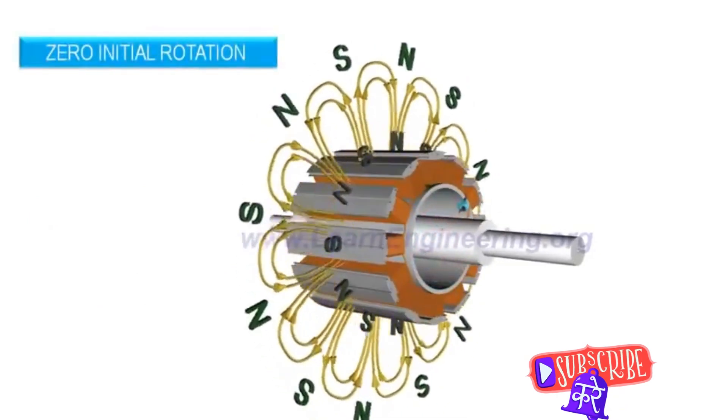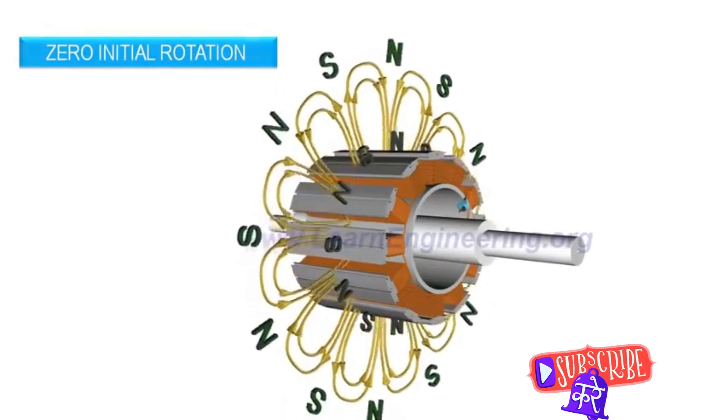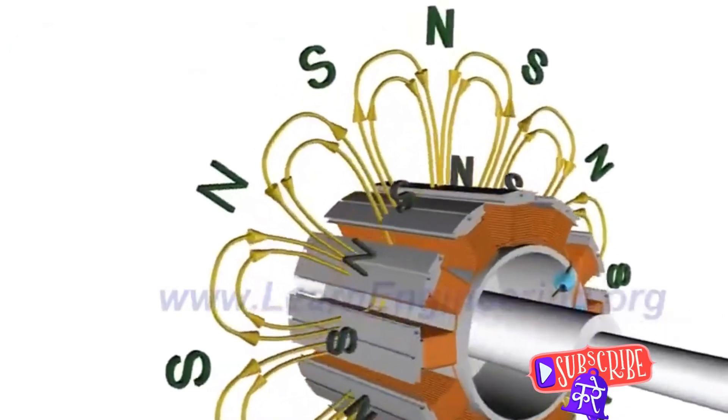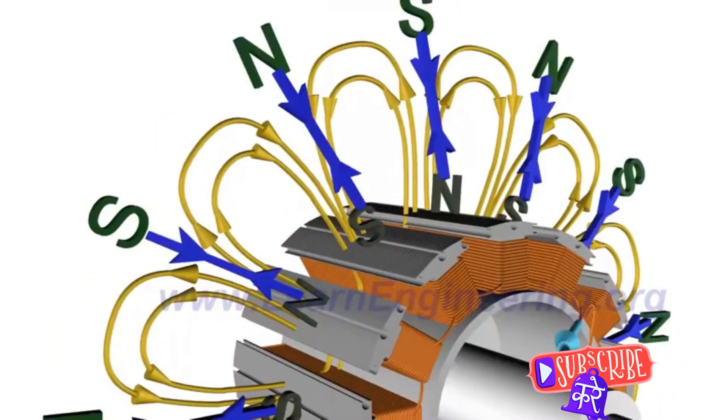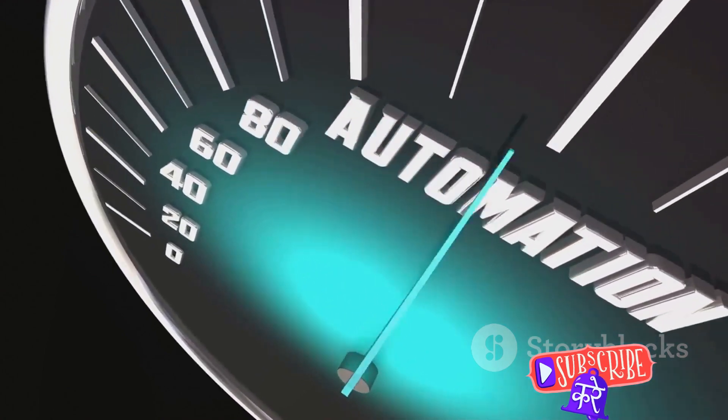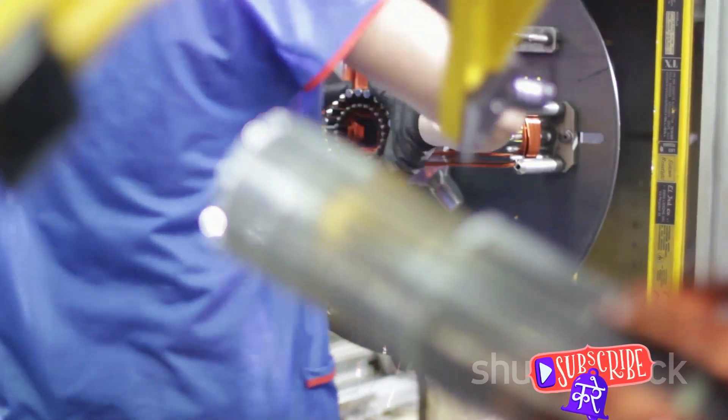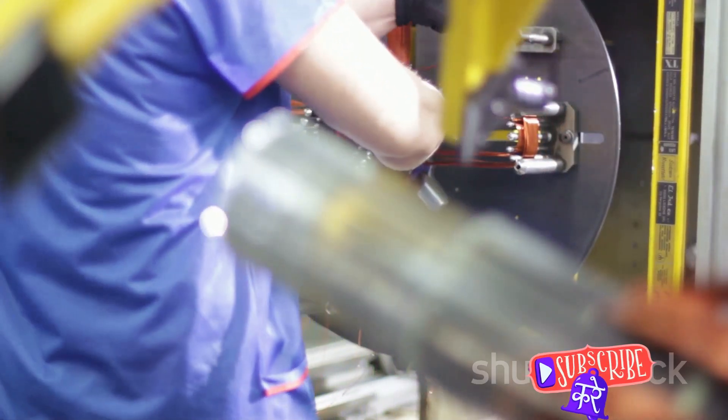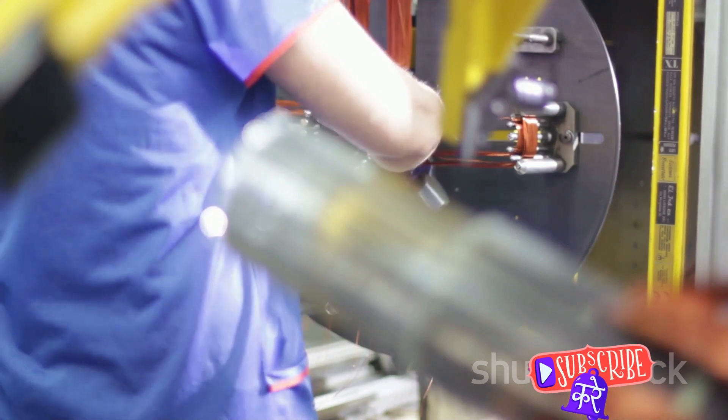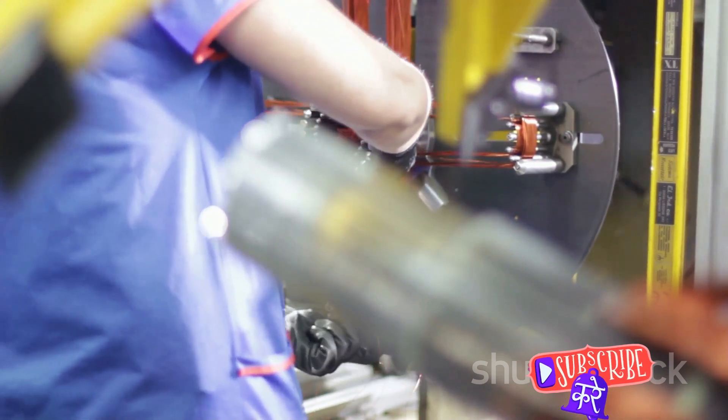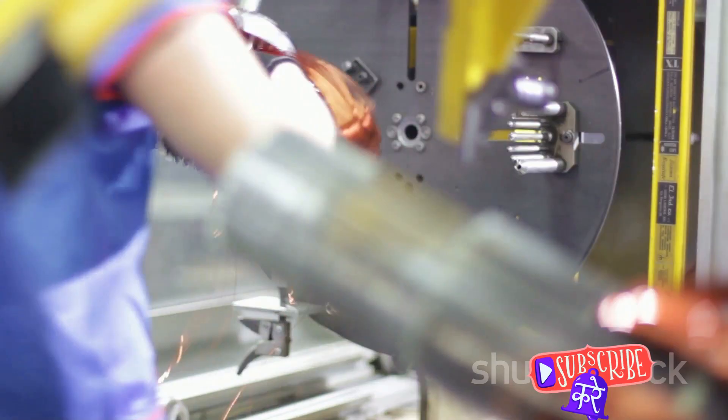The rotor, or the part of the motor that moves, follows this beat precisely, ensuring a constant speed. This synchronization between the power supply frequency and the rotor's speed is what ensures the motor's accuracy. It allows for precise control and consistency, making these motors an excellent choice for applications that require exact speeds and positioning.